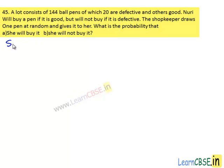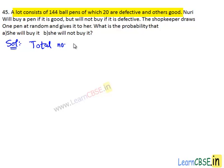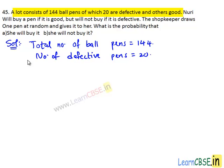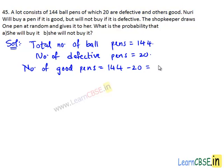Moving on to the solution, let's note down the given information. A lot consists of 144 ball pens of which 20 are defective and others good. Total number of ball pens equals 144. Number of defective pens equals 20. Number of good pens equals total number of ball pens minus number of defective pens, that is 144 minus 20, which is 124 pens.